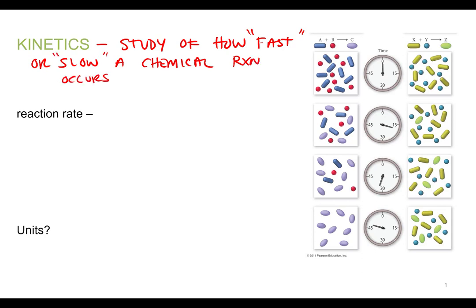The words fast and slow are in quotations because usually when we talk about fast or slow we're talking about speed or velocity. Obviously when we're talking about a chemical reaction we're not going to be referring to the velocity of the individual molecules. So what do we mean by a chemical reaction occurring faster or slower?